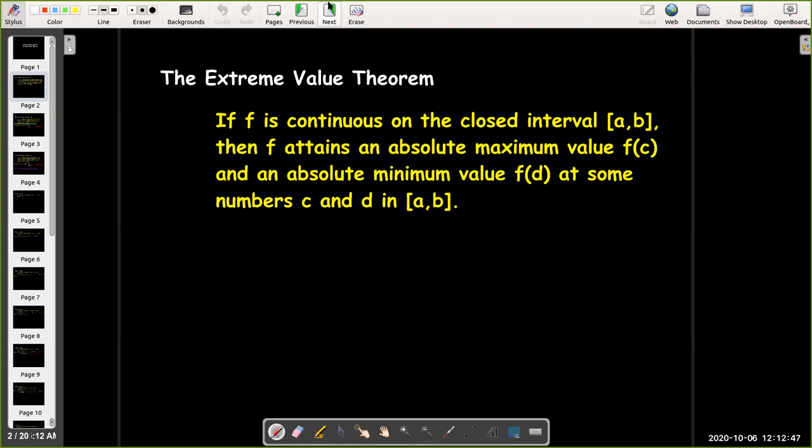In our previous videos, we saw a function where it had no absolute minimum value, even though it was a bounded function. And the only reason that could happen is because it had a jump discontinuity. So if we don't have any discontinuities, then we are always going to have an absolute maximum value and an absolute minimum value on a closed interval.